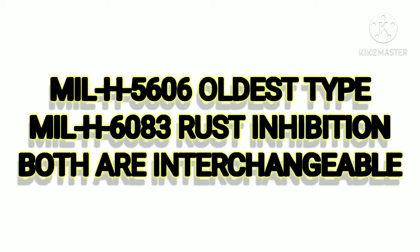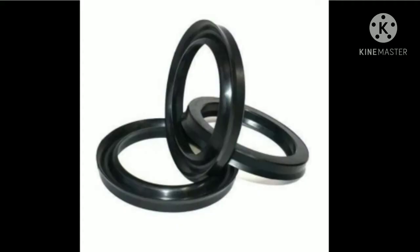Generally, suppliers ship hydraulic components with MIL-H-6083 because of its extra advantage of rust-inhibition. This mineral-based hydraulic fluid MIL-H-5606 is processed from petroleum. It has an odor similar to penetrating oil and is dyed red in color. Synthetic rubber seals are used with petroleum-based fluids.